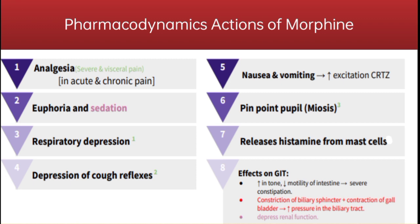Morphine releases histamine from mast cells, causing urticaria, sweating, and vasodilation. Morphine increases tone while decreasing motility of the intestine, causing constipation. It also causes constriction of the biliary sphincter and contraction of the gallbladder, resulting in increased pressure in the biliary tract. Morphine also depresses renal functioning.